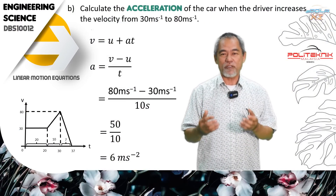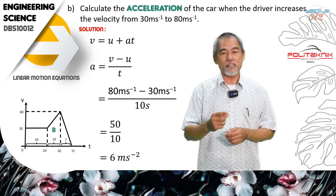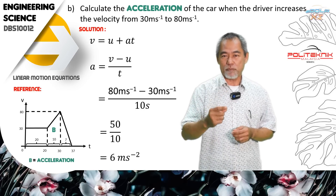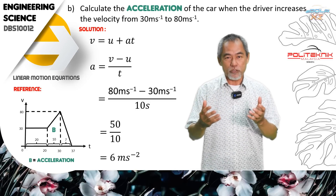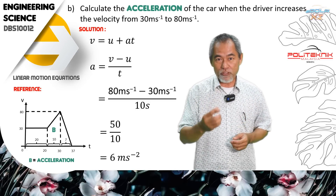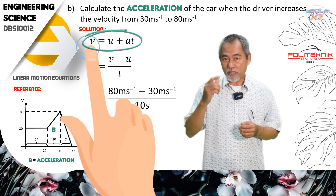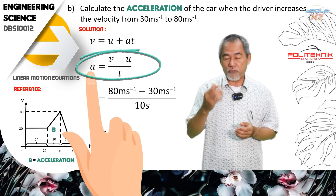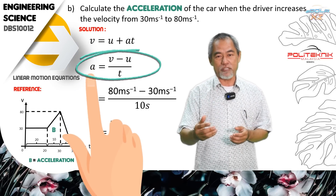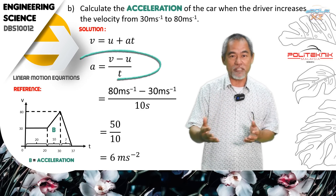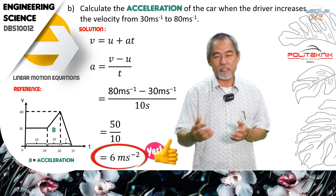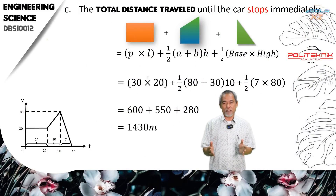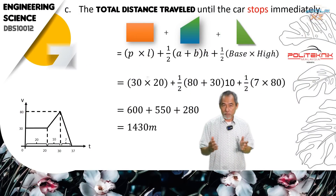Now we calculate the acceleration of the car when the driver increases the velocity from 30 to 80 meters per second. First, we use the velocity equation: V equals U plus A times T. To find the acceleration, A equals V minus U over T. The answer is 5 meters per second squared.